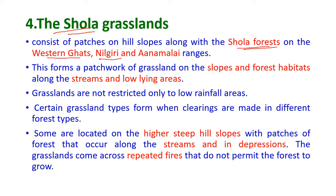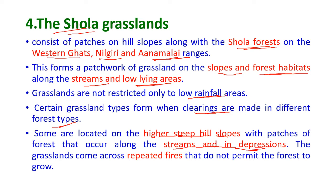Grasslands are not restricted only to low-rainfall areas. Some grassland types form when clearings are made in different forest types, and some are located on higher, steep hill slopes with patches of forest occurring along streams and in depressions. Grasslands often come across repeated fires, and due to fires in these areas the forest is not permitted to grow further.